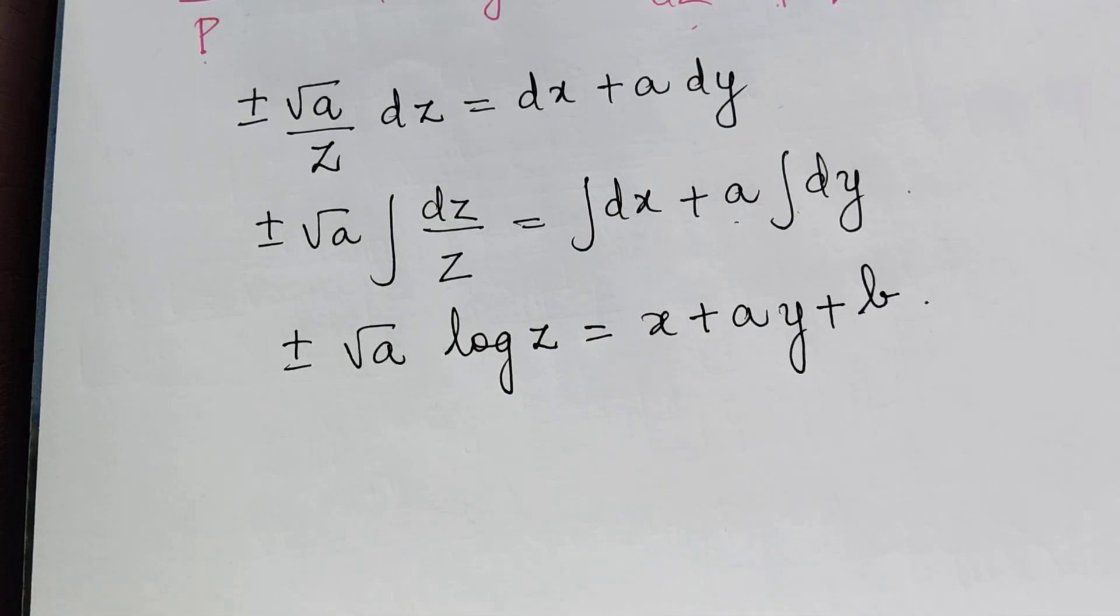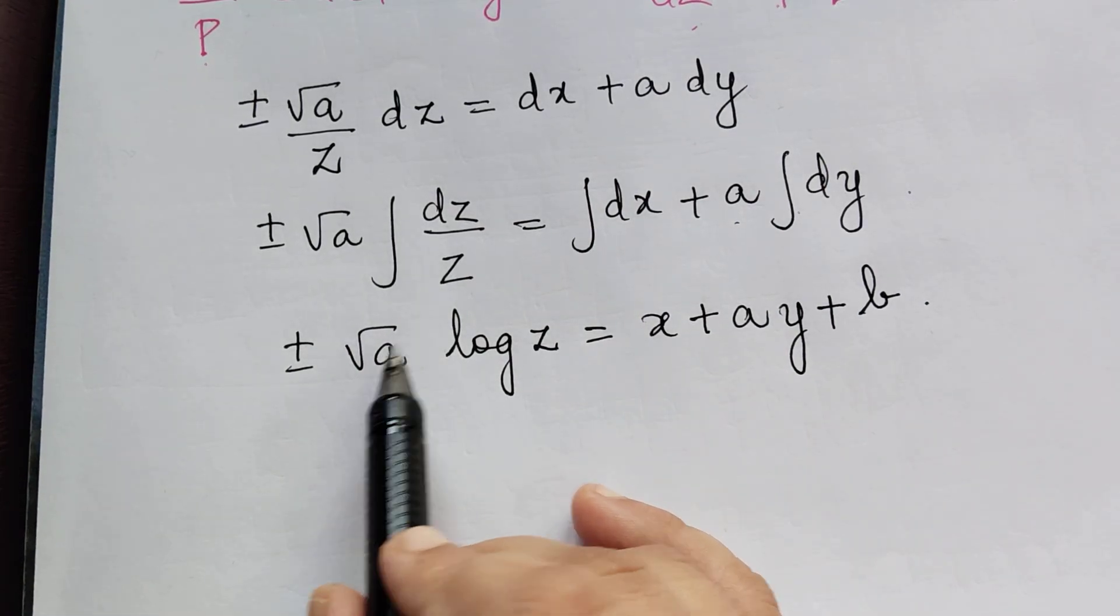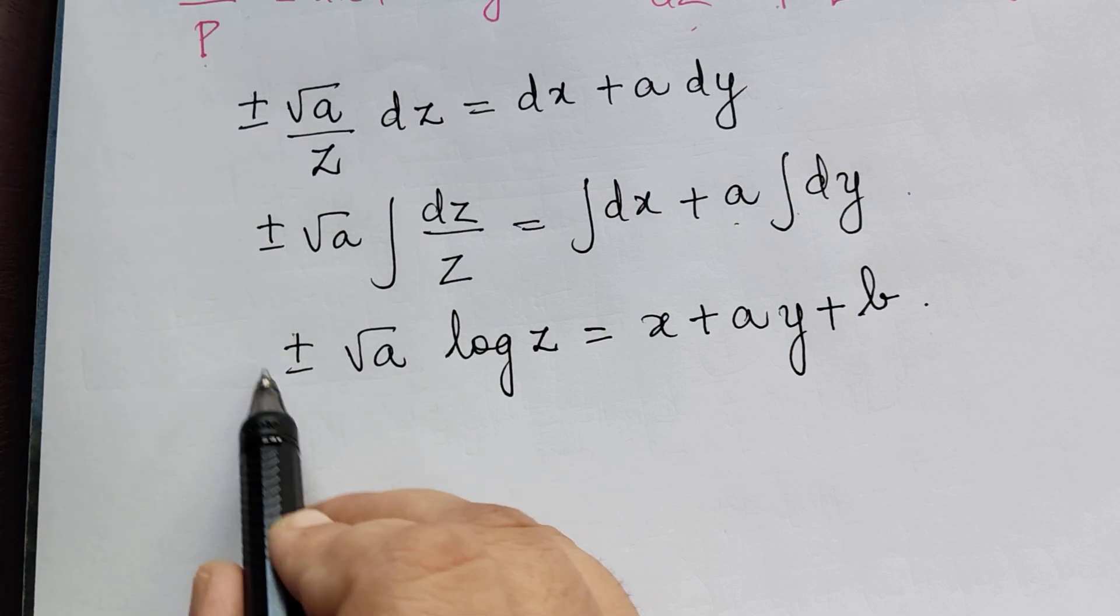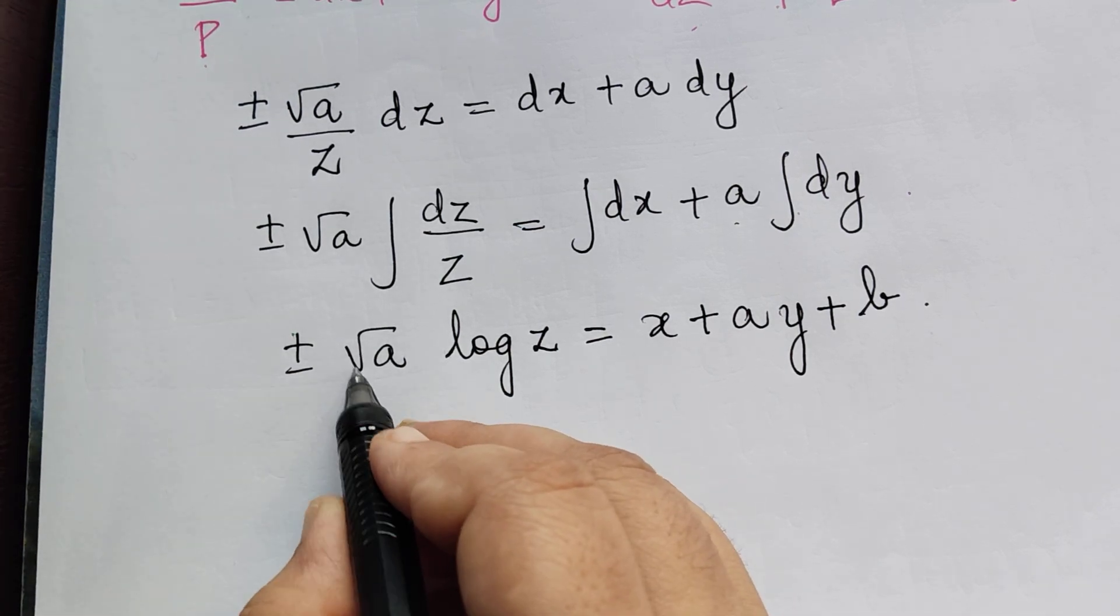To get rid of the square root, let us square both sides. When we square, plus or minus becomes plus, and √A